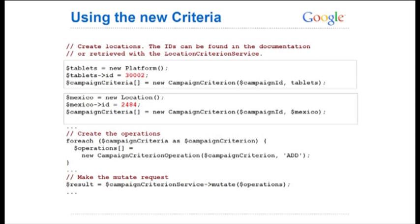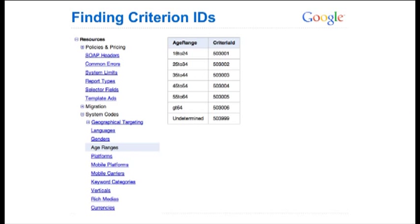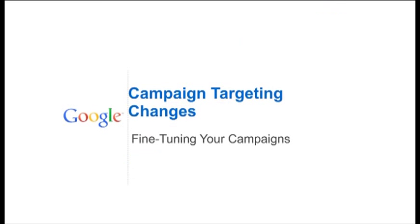So where can you find these IDs? A couple of them are available in the constant data service, but for everything else we have published lists of codes at the very bottom left of the documentation page under system codes. You can see the age ranges selected here — these are the different criterion IDs for all the possible age range targets. All right, thank you very much.